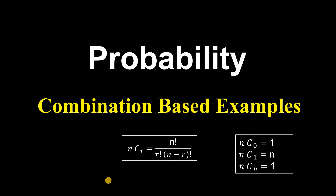Hello everyone. In this video we will solve combination-based probability problems. Combination-based probability problems are based on the formula NCR, which is equal to n factorial upon r factorial into n minus r factorial. Remember: the value of NC0 is equal to 1, the value of NC1 is equal to n, and the value of NCn is also equal to 1.